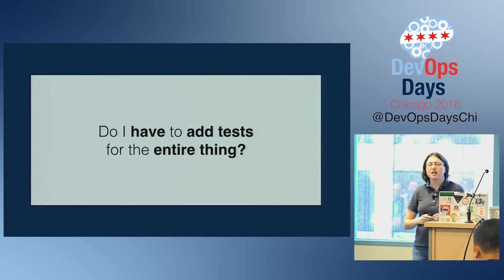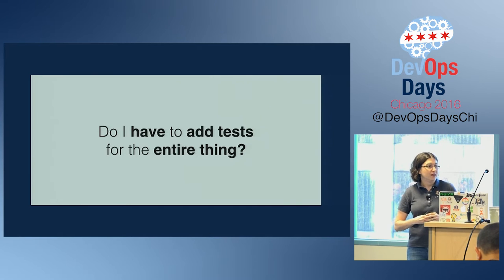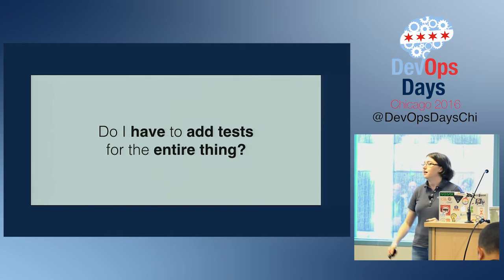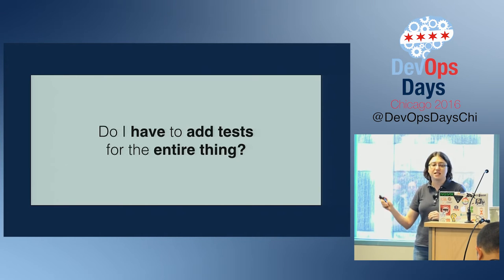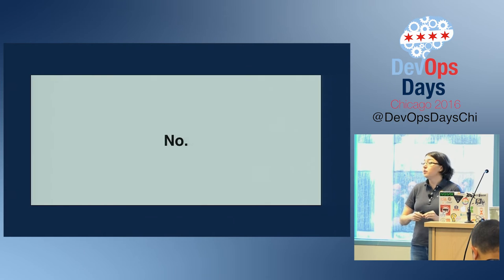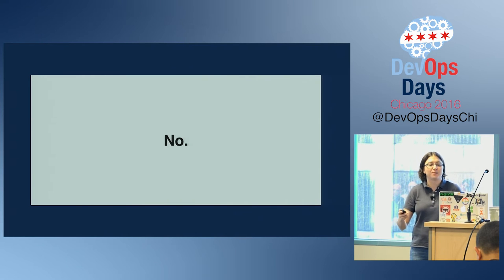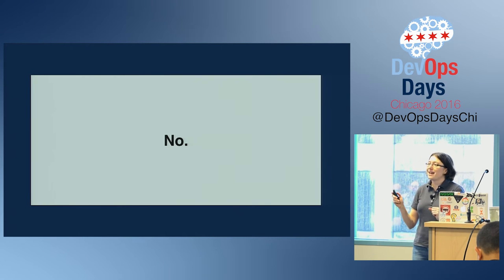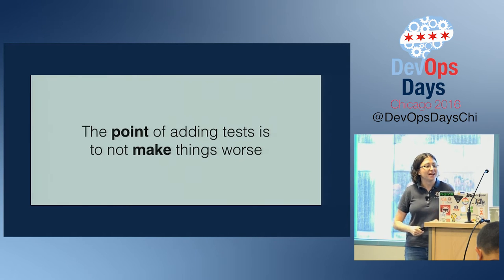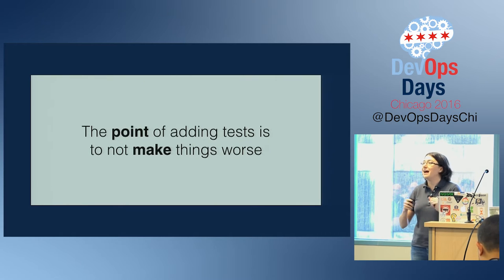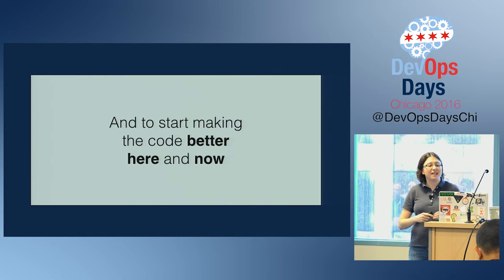Sometimes people immediately dismiss this approach as impractical. If they have a giant legacy code mess, are they supposed to suspend new work until they can add tests for everything? The answer is unequivocally no. It would be very impractical to try to cover a whole code base in tests. The point of adding tests when refactoring is to not make things worse — to preserve the current functionality at the very least, and to start making the code better here and now.